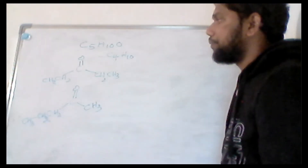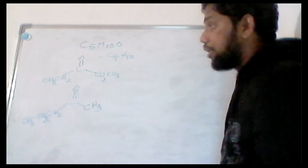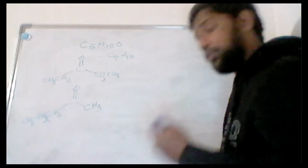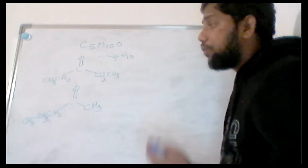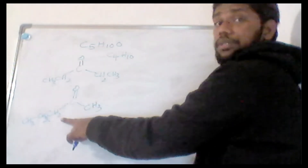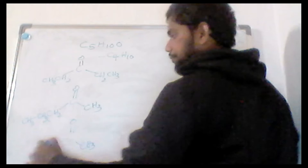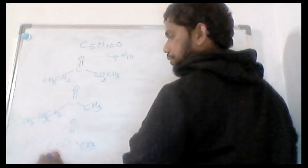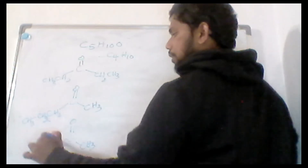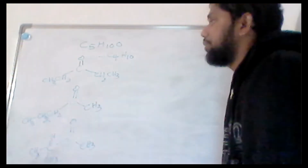When you see three carbons, always try a branched structure. Instead of attaching at the terminal carbon, attach at the middle carbon. So the third isomer has CH3, CH3, and one hydrogen on the middle carbon — giving 3-methylbutan-2-one. These are all three available structural isomers for A, B, and C.